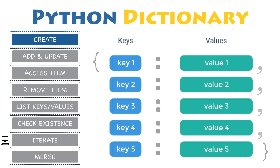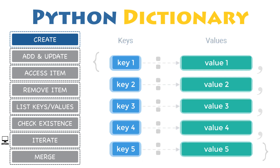While values can be of any data type and can repeat, keys must be unique and of immutable type, like string, number, or tuple with immutable elements. Let's have a closer look at its syntax, so you can declare your own dictionary.